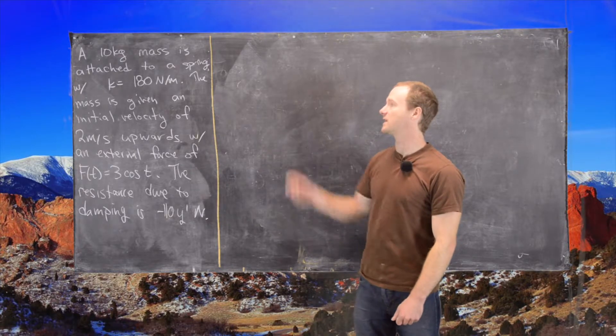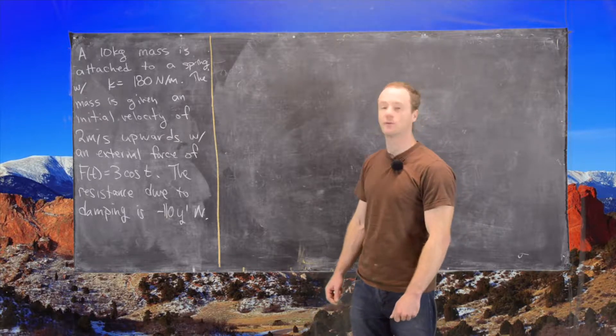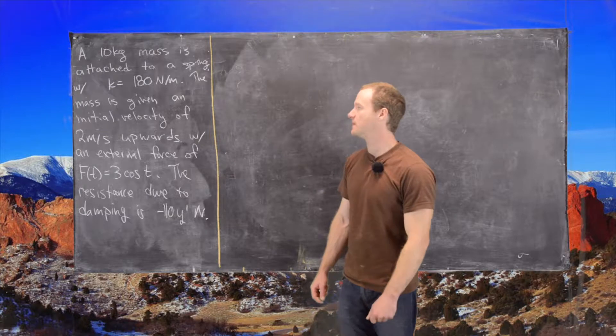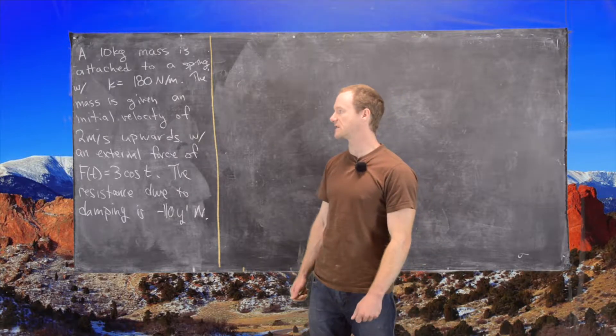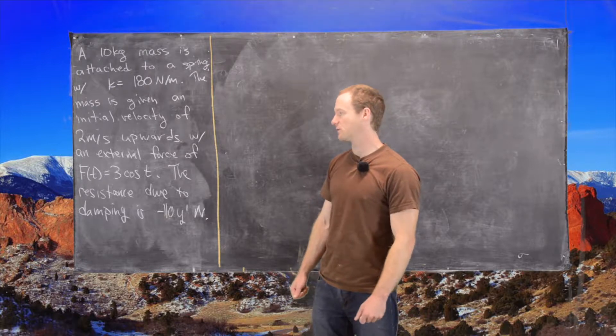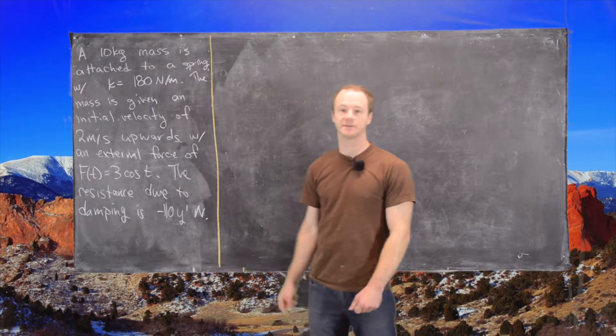So let's look at our setup. We have a 10 kilogram mass attached to a spring with a spring constant of 180 newtons per meter. The mass is given an initial velocity of 2 meters per second upwards with an external force of 3 times cosine t.